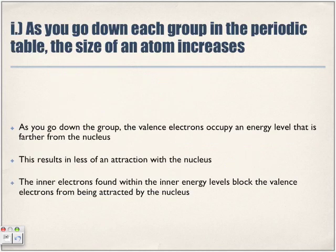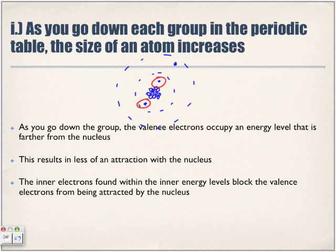As you go down each group in the periodic table, the size of an atom increases. The valence electron occupies an energy level that is farther from the nucleus than the innermost energy levels, resulting in less of an attraction with the nucleus because they're further away. The inner electrons found within the inner energy levels block the valence electrons from being attracted by the nucleus. We have the cluster of protons and neutrons forming the nucleus, and the first energy level that is full — those electrons are blocking the attraction of the nucleus with that outermost valence electron.